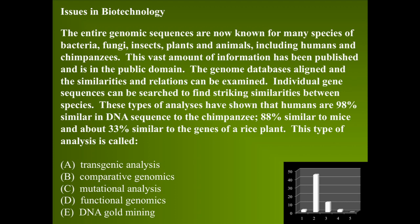The entire genomic sequences are now known for many species, including bacteria, fungi, insects, plants, and animals including humans and chimpanzees, and this list is continuously growing. This type of analysis that compares similarities and differences among these species is now called comparative genomics.